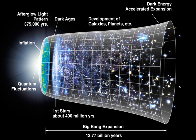General relativity has passed stringent tests on the scale of the solar system and binary stars. If the large-scale universe appears isotropic as viewed from Earth, the cosmological principle can be derived from the simpler Copernican principle, which states that there is no preferred observer or vantage point. The cosmological principle has been confirmed to a level of 10⁻⁵ via observations of the CMB, and the universe has been measured to be homogeneous on the largest scales at the 10% level.